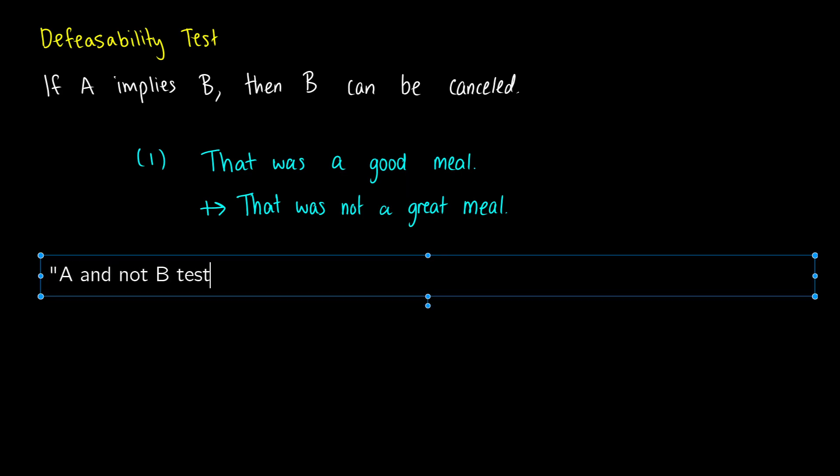So A and not B test. And when we do the A and not B test, we're not going to get a contradiction, like we would with entailment.